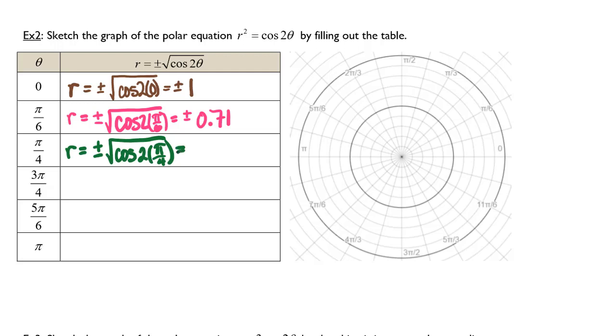This will give me pi over 4, and this will give me r equals plus or minus the square root of cosine of 2 times 3 pi over 4.